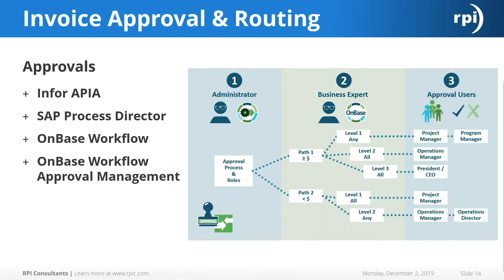Once we receive, index, and verify the document and work through any exceptions, we need approvals — does this manager approve it, does this director approve it? There are many tools for approvals: Infor has the APIA or Invoice Automation module depending on your version. There is also Stat Process Director, OnBase Workflow, or OnBase Workflow Approval Management used in conjunction with OnBase Workflow. We'll go into those in a little more depth in the next few slides.